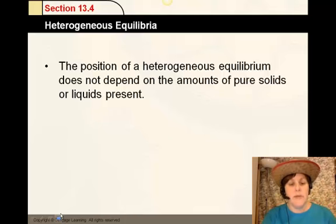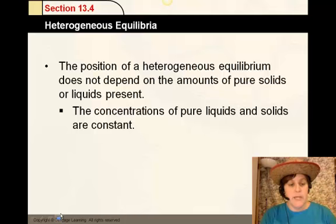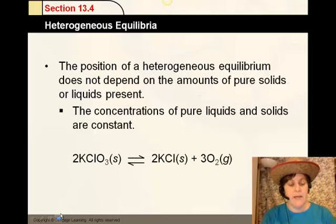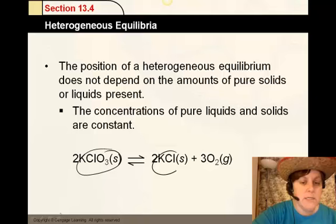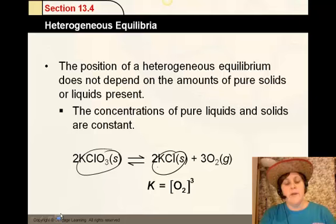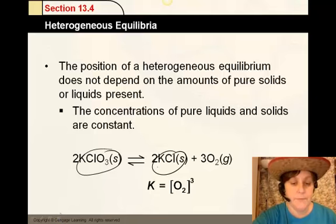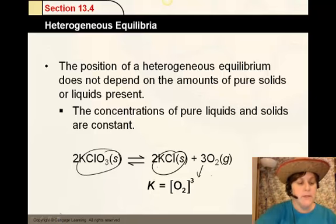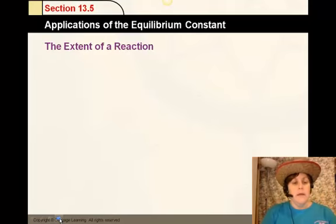The position of a heterogeneous equilibrium does not depend on the amount of pure solids or liquids present. In the previous reactions that we saw, we would actually just count them as one. They're there, but they have no influence on that. The concentration of pure liquids and solids are constant. Here's a good example. Notice, if we did products minus reactants, this species and this species are both solids, and they wouldn't count. Therefore, the value of K is only dependent on the concentration of oxygen raised to the third power. And again, you can see why it's raised to the third power.